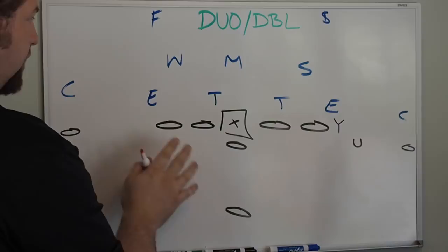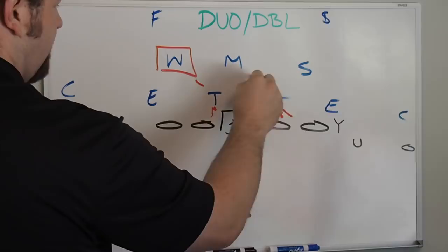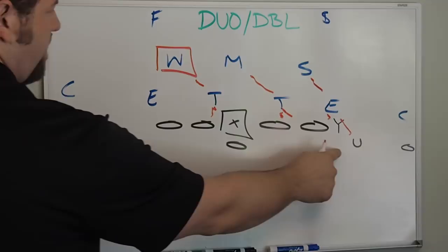On a gap play, on duo, you ID the will. So that's a big difference right here because the center is going to work back to the will. On gap you end up all kind of working back. So it's going to be double team, double team up here, double team, double team to the mic, double team, double team up to the center.